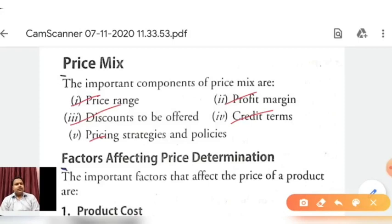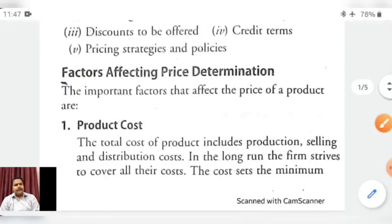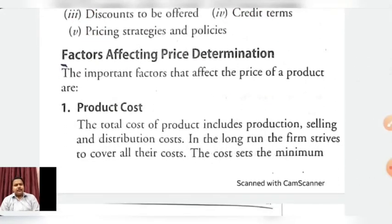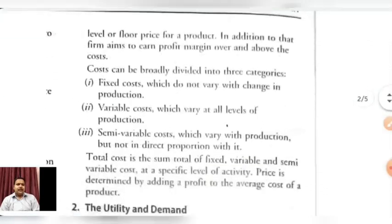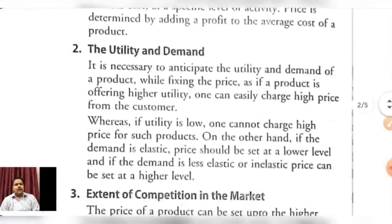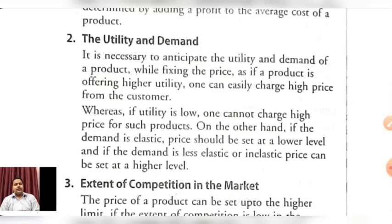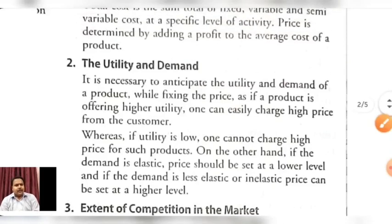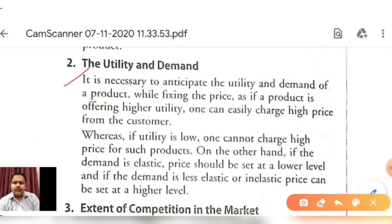In the last video we discussed the first factor affecting price determination, which is product cost. Now we will move to the second factor affecting price determination — that is utility and demand. Utility means the power or satisfaction a product provides. Demand also creates the price of the product. So the second element which influences the price is utility and demand.